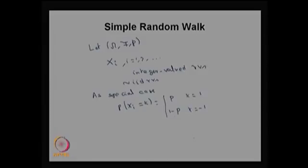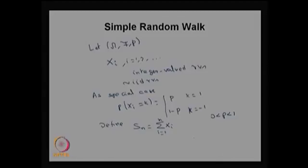This is a special type of random walk — in general I will also define the general random walk. As a special case, X_i takes a value 1 with probability p and minus 1 with probability 1 minus p, where p can take any value from 0 to 1. Now I define the random variable S_n as the sum of the first n X_i's, and the stochastic sequence S_n for different values of n forms a simple random walk.